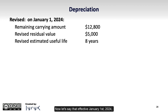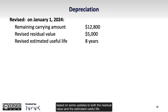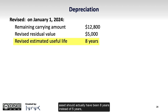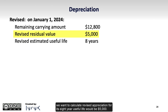Now let's say that effective January 1, 2024, we want to calculate revised depreciation for 2024 based on some updates to both the residual value and the estimated useful life. Let's assume management has determined that the total useful life of the asset should actually have been 8 years instead of 5 years, and the revised residual value of the asset at the end of its 8-year useful life would be $5,000.